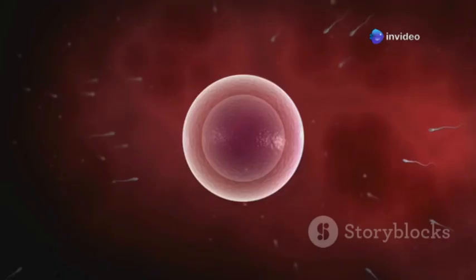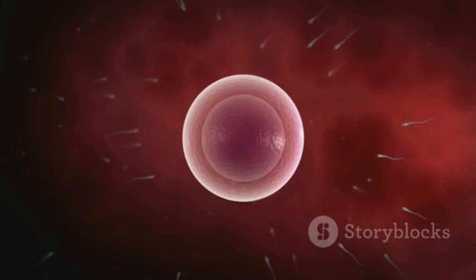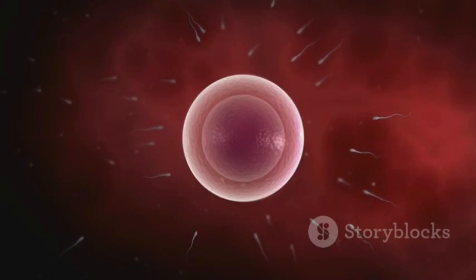After about five to seven days, this developing ball of cells, now called a blastocyst, reaches the uterus. Here, it implants itself into the rich, soft lining of the uterine wall. This process, called implantation, is crucial for the continuation of the pregnancy.